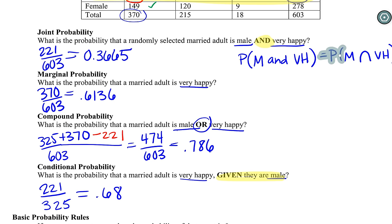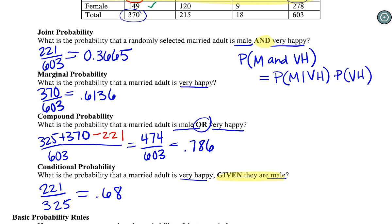You guys don't have to flip back. I just want to bring that up. So the formula we just saw said the probability of A and B is the same thing as the probability of A given B times the probability of B. That is one way to calculate this out. So we already know the answer to M and very happy — male and very happy — and now we're thinking about multiplying these other ones.